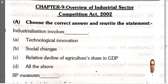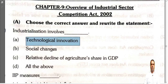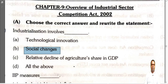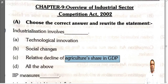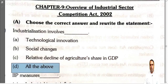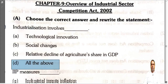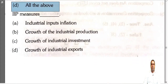Industrialization involves which of the following? Number one: technological innovation — technology is used in industrialization. Secondly, it could also involve social changes — society changes with industrialization. And very importantly, the share of agriculture in the GDP may ultimately decline. So the answer is option D: all of the above — technological changes, social changes, plus a reduction in the share of agriculture in a country's GDP.